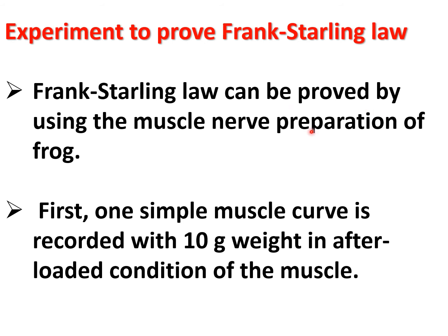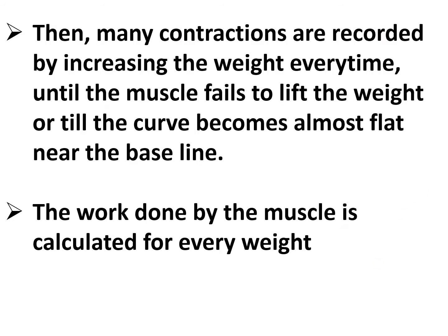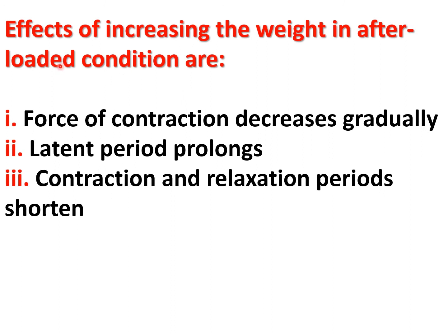Frank Starling's law can be proved by using a muscle-nerve preparation of the frog. First, one simple muscle curve is recorded with 10 gram weight in the after loaded condition. Then many contractions are recorded by increasing the weight every time until the muscle fails to lift the weight or until the curve becomes almost flat near the baseline. The work done by the muscle is calculated for every weight. Effects of increasing the weight in after loaded condition are: force of contraction decreases gradually, latent period prolongs, and contraction and relaxation period shorten.